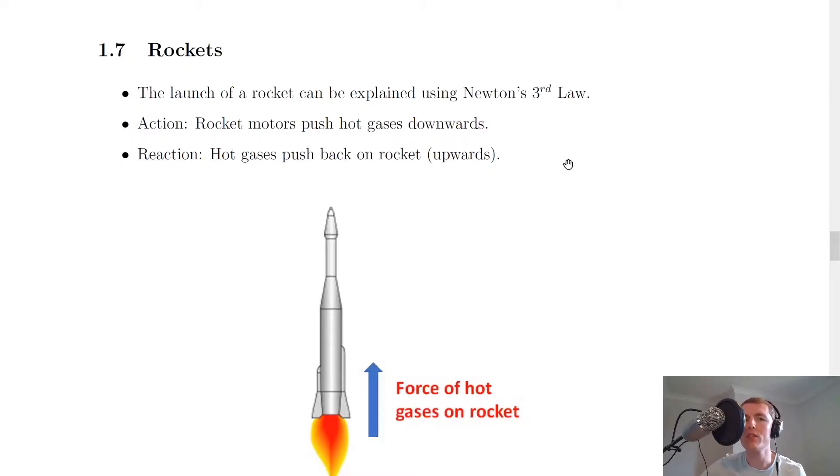Now the first thing to notice is that the launch of a rocket can be explained using Newton's third law. And remember when we're talking about Newton's third law, we can talk about the action and reaction forces, i.e. the Newton pair. So for the action force we've got rocket motors pushing hot gases downwards and for the reaction force we've got hot gases pushing back on the rocket upwards.